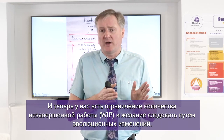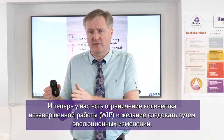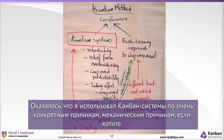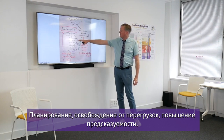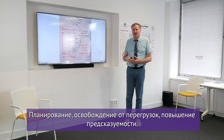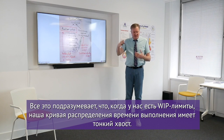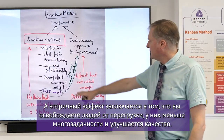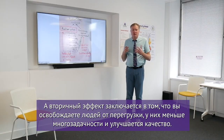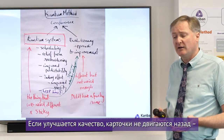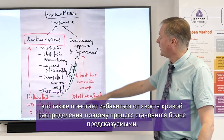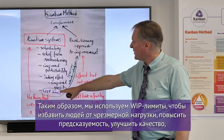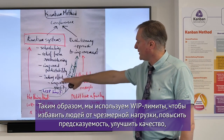Now we've got a WIP limit and the desire to pursue evolutionary change. The use of Kanban systems was adopted for very specific mechanical reasons: scheduling, relief from overburdening, improved predictability. When we have a WIP limit we have a thin-tailed lead time distribution. Secondary effects follow: people are relieved of overburdening with less multitasking, quality gets better, and if quality gets better, tickets don't circulate backwards as much — which also removes the tail from the distribution, giving us more predictable and improved quality outcomes.